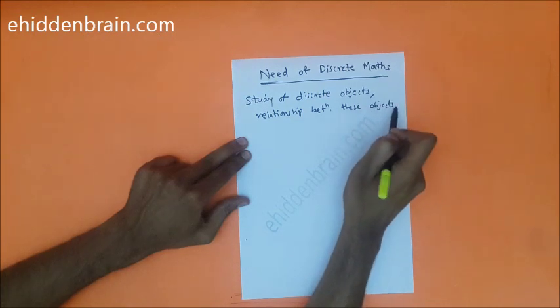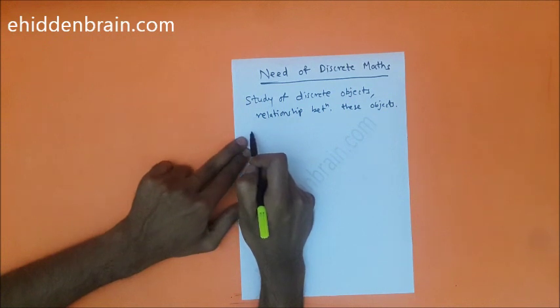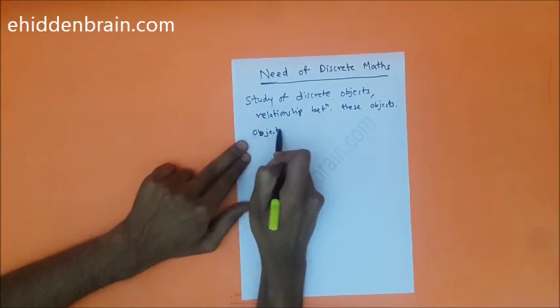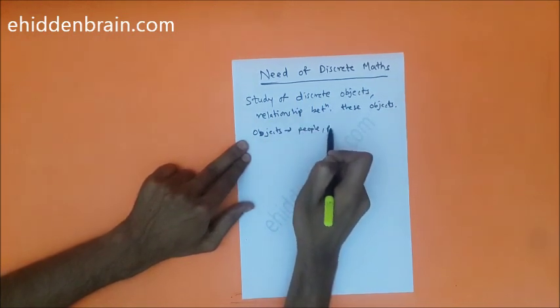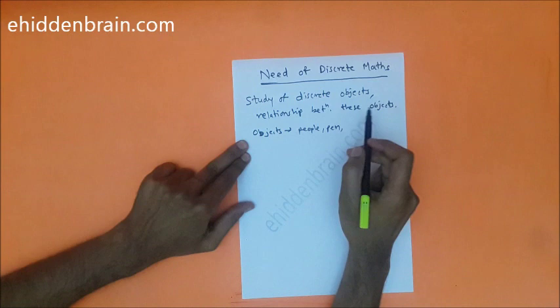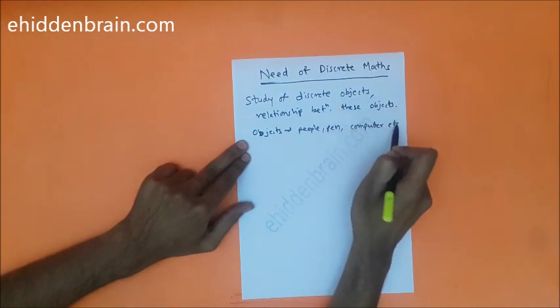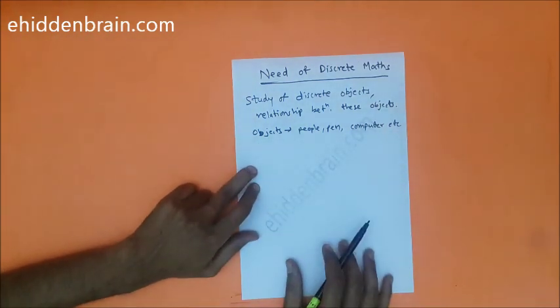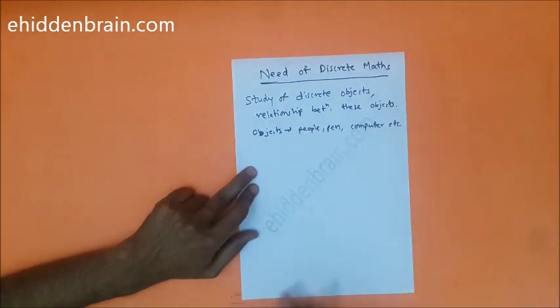What are discrete objects? Discrete objects include a lot of things like people, pen, computers, etc. We will be studying discrete mathematics for relationships and a lot of stuff regarding these objects.